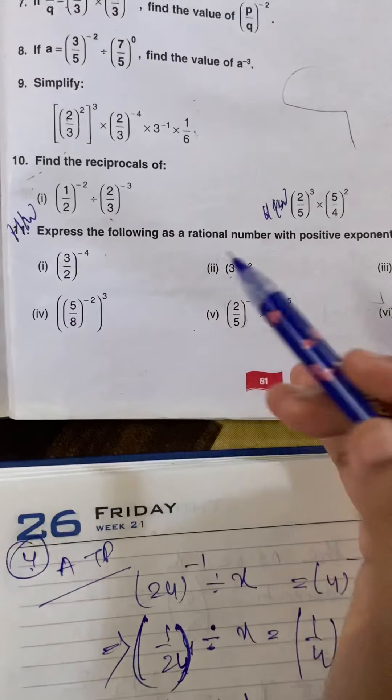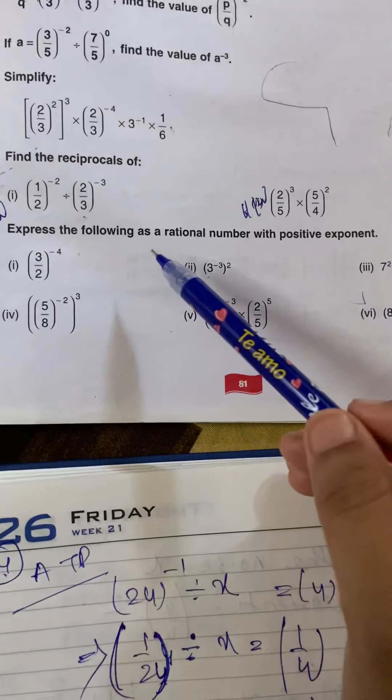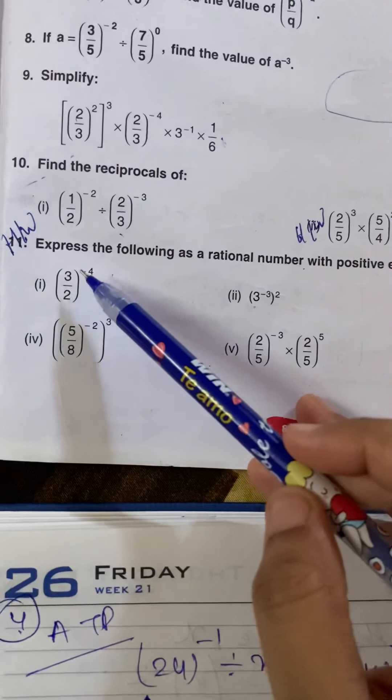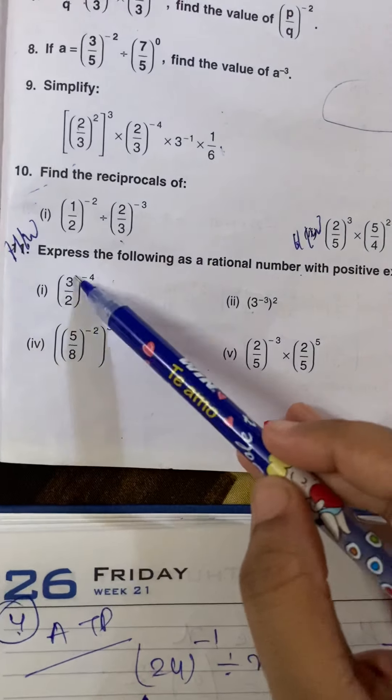Now, question number 11 is very easy. Express the following as a rational number with positive exponent. To, yis me minus 4 hai. Positive karne ke liye kya karna ho ga? 2 by 3.